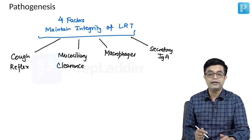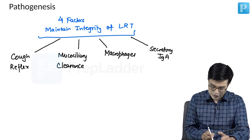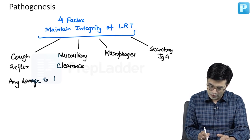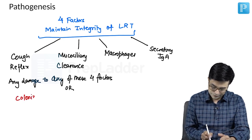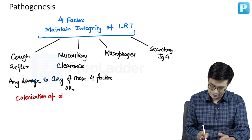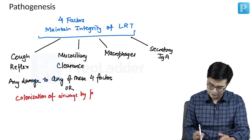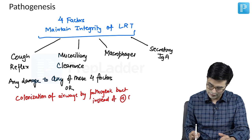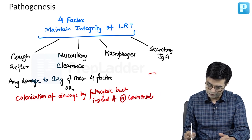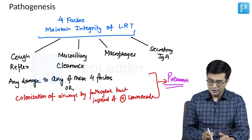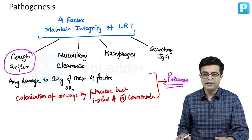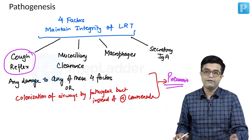These four factors maintain the integrity of the lower respiratory tract. Any damage to any of these four factors, or colonization of airways by pathogenic bacteria instead of normal commensals, will produce pneumonia in the child. For example, inability to cough post-surgery or inability to cough properly due to a neurological disorder — the child will develop recurrent pneumonia.